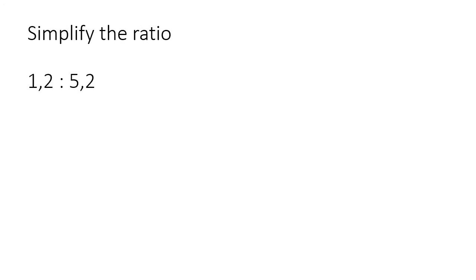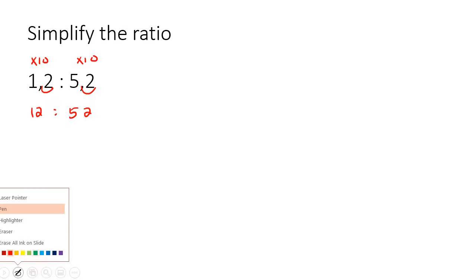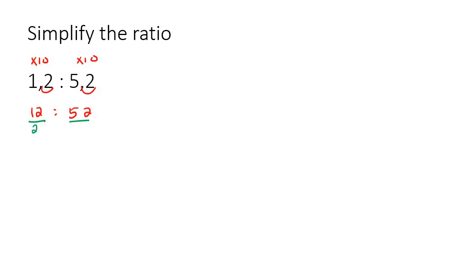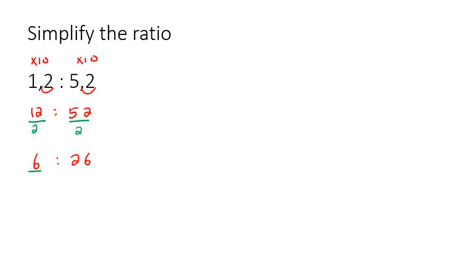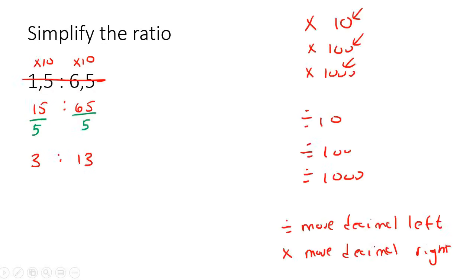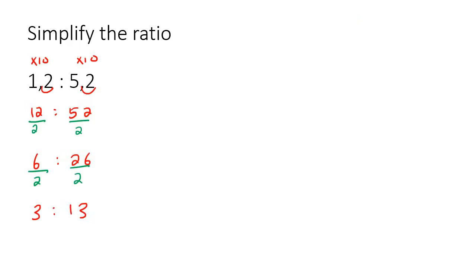Here's another one with decimals. We'll just multiply by 10 — what you do to one you do to the other — and that will just become 12 and 52. Now we can start breaking these numbers down a little bit at a time. Starting with dividing by two, that's going to take us to six and 26. These two numbers can go even smaller, so divide by two again, and that gives you three and 13.